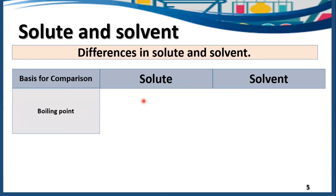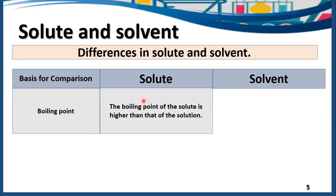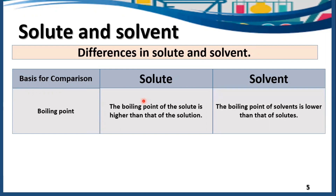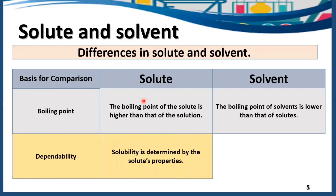On the basis of boiling point: the boiling point of a solute is higher than that of a solution, and the boiling point of solvent is lower than that of the solute. The solute has a higher boiling point because mostly it is present in solid form, whereas the boiling point of solvent is lower because mostly it is present in liquid or gaseous state.